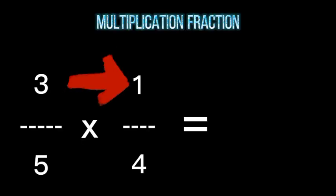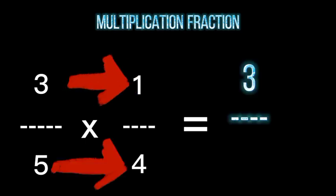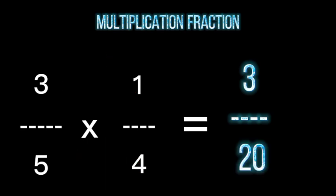First example is the multiplication fraction. We need to multiply 3 and 1, it gives us the answer of 3. 5 times 4 gives us the answer of 20. The final answer to this problem is 3 over 20.